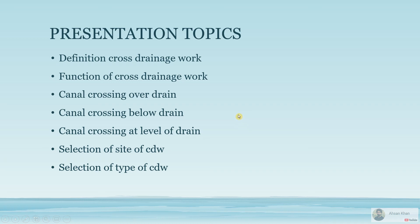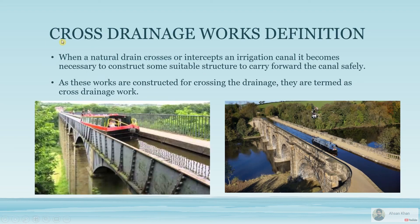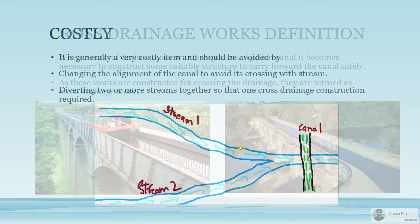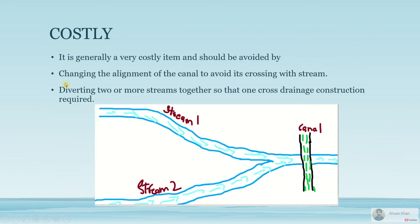Welcome back. In this video we are going to be discussing cross drainage works — what they are and what are the different types that we can construct. Cross drainage works involve two different streams crossing each other, for example a main natural stream in the form of a river and a canal passing above or below it. This type of construction where two different mediums cross each other requires a cross drainage work, and they are usually costly.